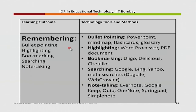You saw how the tool and the purpose are matched. These are a list of tools and their purposes at the remembering level. For bullet-pointing you can use PowerPoint, mind maps, or flashcards. For highlighting, you can use a word processor like MS Word. For searching you can use Google, Bing, Yahoo, or Metasearch. For note-taking you can use Google Keep, OneNote, or Simple Note. This list is not exhaustive — ultimately, the level is simple remembering, where they list, identify, or do the lowest-level cognitive task.